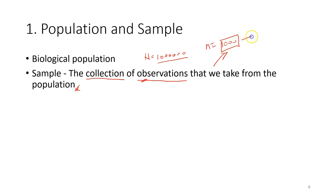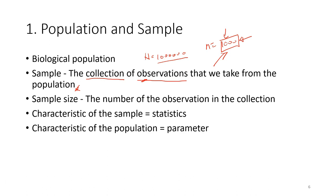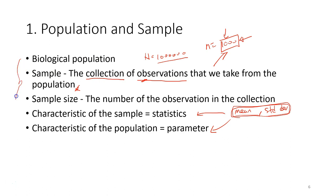Of course, it's not about the student themselves — it's about the measurement obtained from the student, whether that's gender, body height, weight, or student results. The sample size is the number of observations in the collection. The characteristics of the sample we will call a statistic, and the characteristics of the population we call a parameter. The mean and standard deviation are used to describe both the sample and the population.